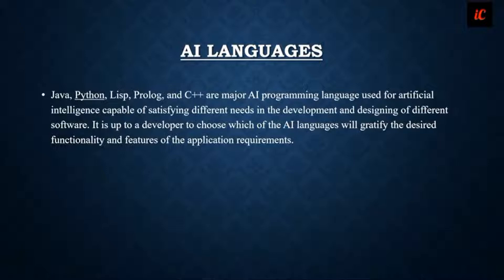Java, Python, Lisp, Prolog, and C++ are the major AI programming languages used for artificial intelligence. They are capable of satisfying the different needs in the development and design of different software.